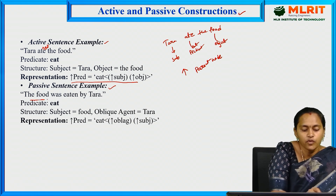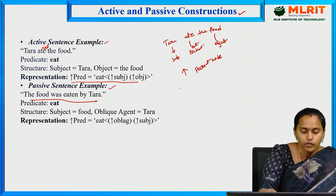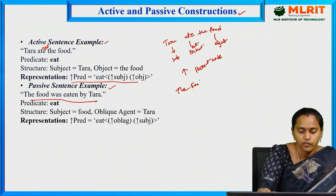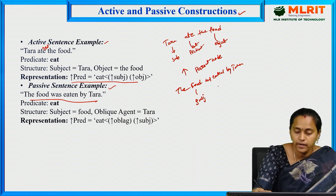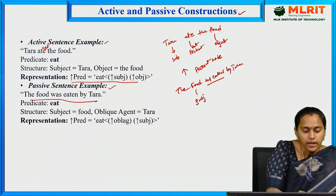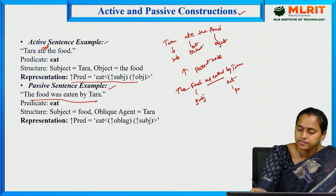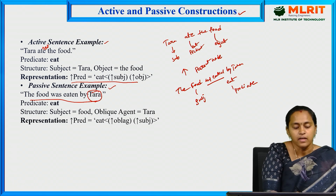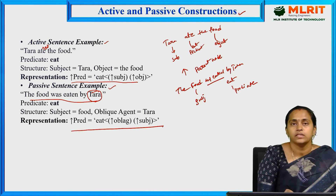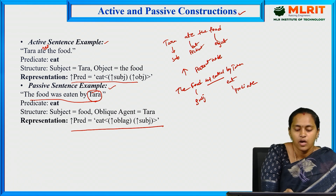For the passive sentence 'The food was eaten by Tara': 'food' is the subject, 'eat' is the predicate, and 'Tara' is the oblique agent. The up-arrow defines the parenthood in the F-structure. This is the predicate structure definition in lexical functional grammar.